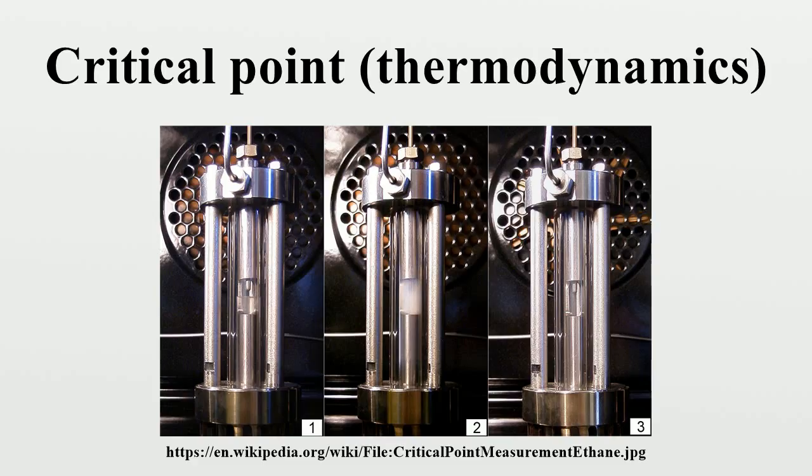The existence of a critical point was first discovered by Charles Cagniard de la Tour in 1822 and named by Dimitri Mendeleev in 1860 and Thomas Andrews in 1869. Cagniard showed that CO2 could be liquefied at 31 degrees Celsius at a pressure of 73 atmospheres, but not at a slightly higher temperature, even under pressures as high as 3000 atmospheres.